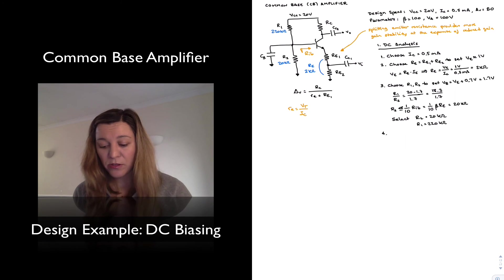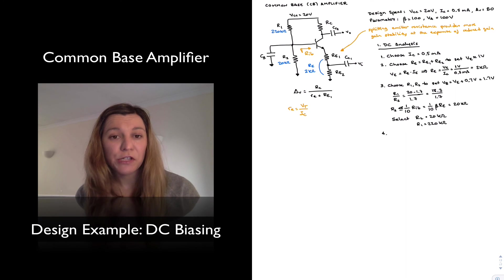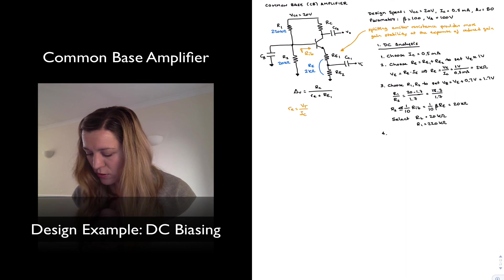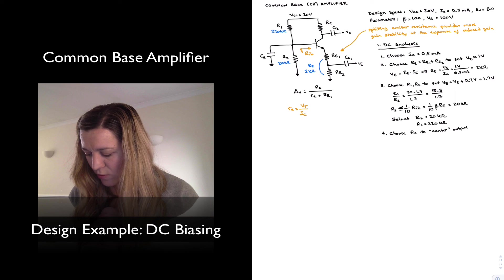And my final step is to select the value for RC, and I'm going to select the value so that my output gets centered for maximum output voltage swing. So I want to center the value of VC with respect to the two supplies, or in this case VCC and ground.